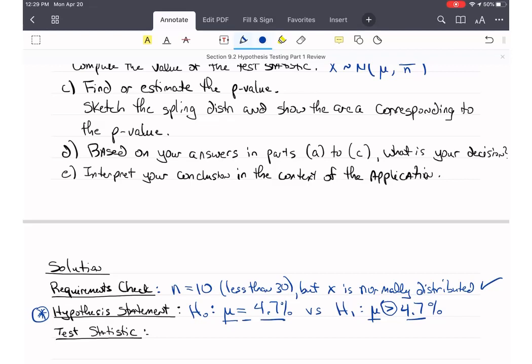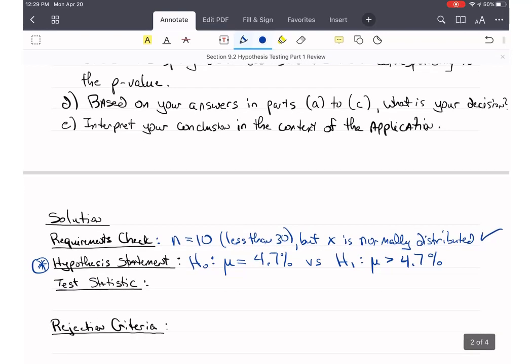If our claim is greater than, we put a greater than. If it's less than, or lower, or something like that, we put a less than. If it's different, or not something, then we put the not equals to. So I hope this is helping reinforce the correct method for this. Now, let's look at our test statistic.